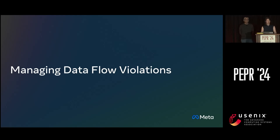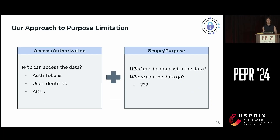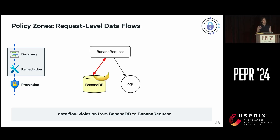Let's talk about the data flow violation portion of this workflow — specifically how we discover, remediate, and prevent new violations from occurring. These data flow violations are what we had to build new technology to solve. Going back to the challenge of having a lack of standardized tools in the industry, we created our answer to this, which is called PolicyZones. We're going to step through a toy example with our banana data to show how PolicyZones works.